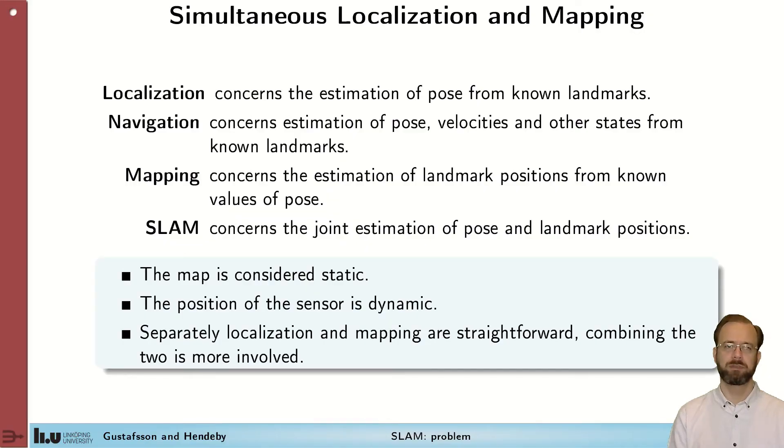So what is simultaneous localization and mapping? Well, it's a problem in two parts. It's a localization problem, which concerns how to find your own position given a map, so you observe your environment and compare that to the map and give yourself a position. That's a fairly straightforward problem to solve. It can be slightly extended to navigation, which also includes information about velocities and such, because you want to get from point A to point B.